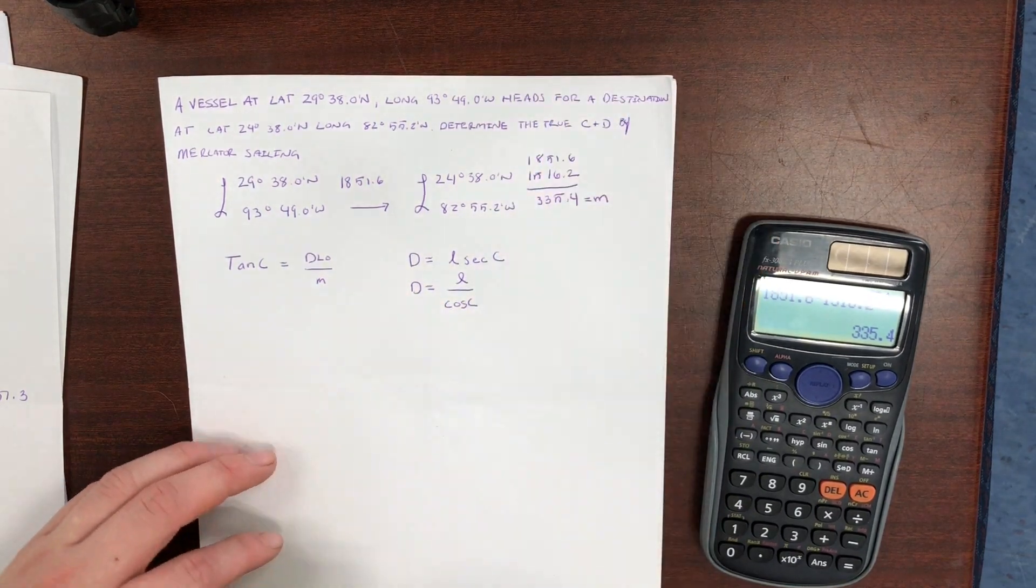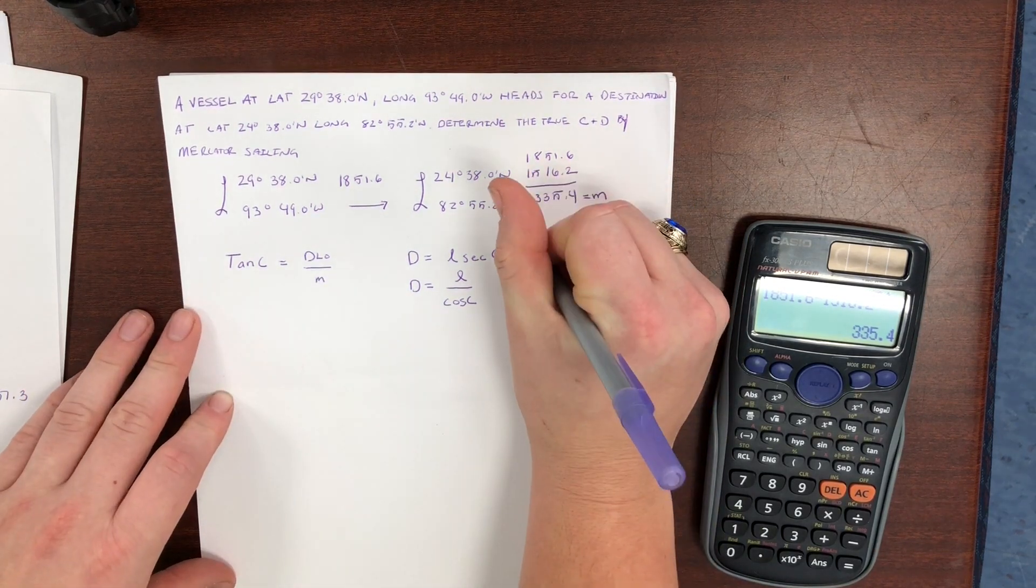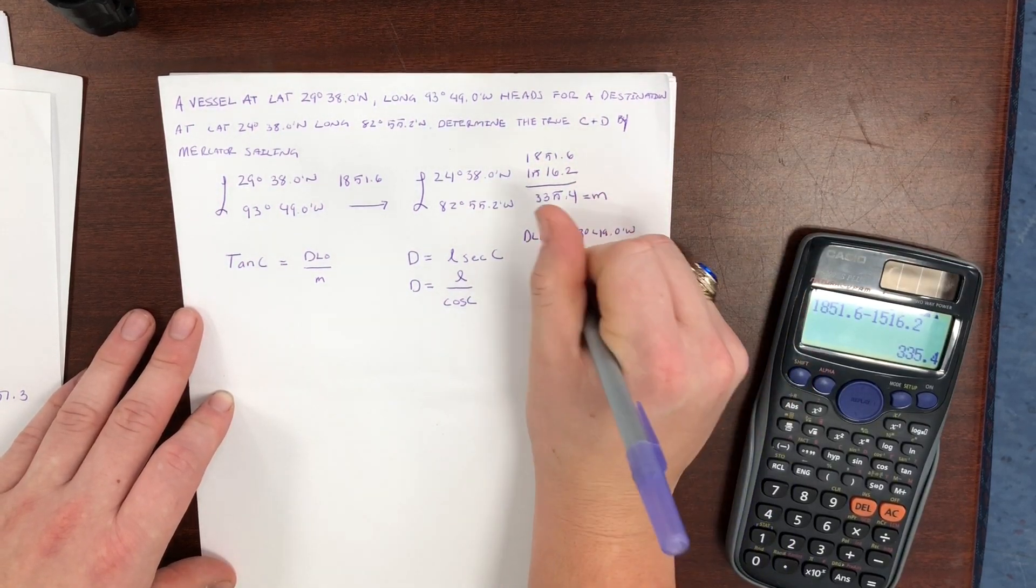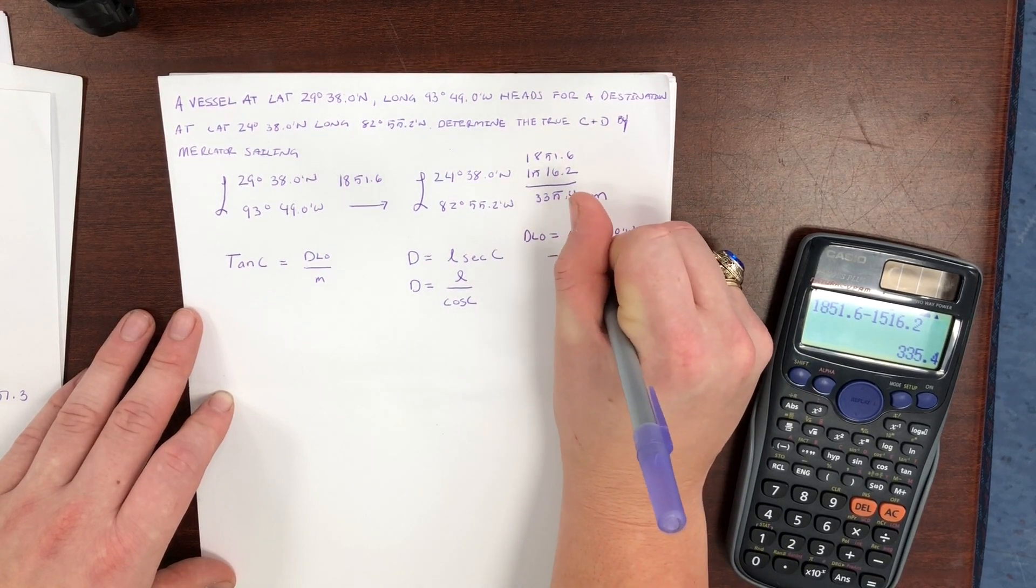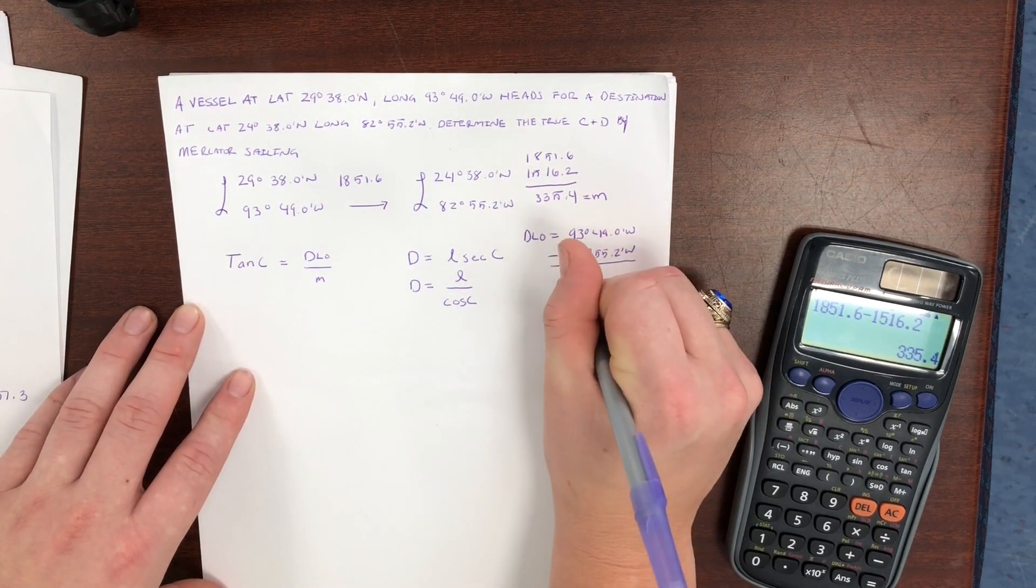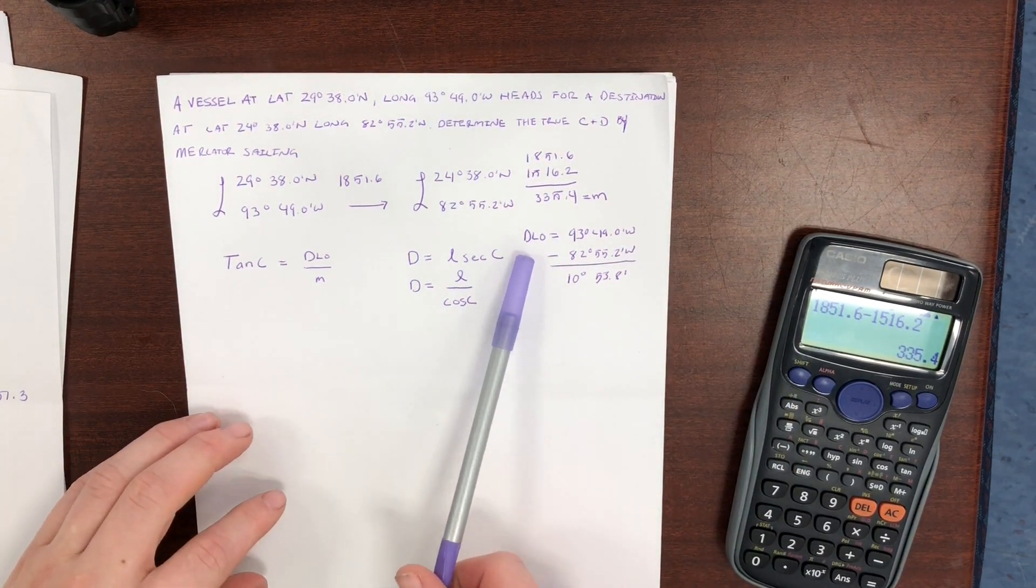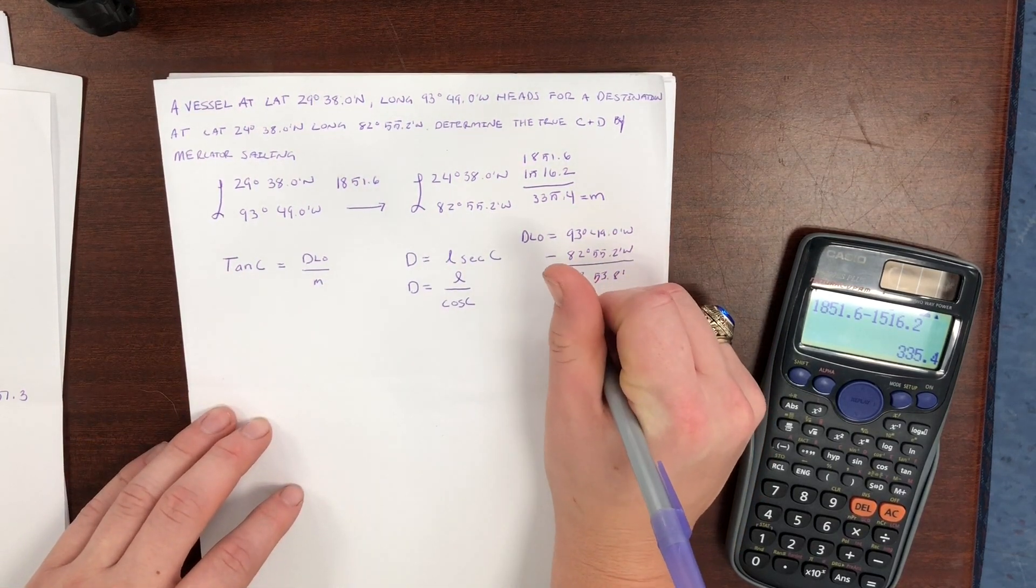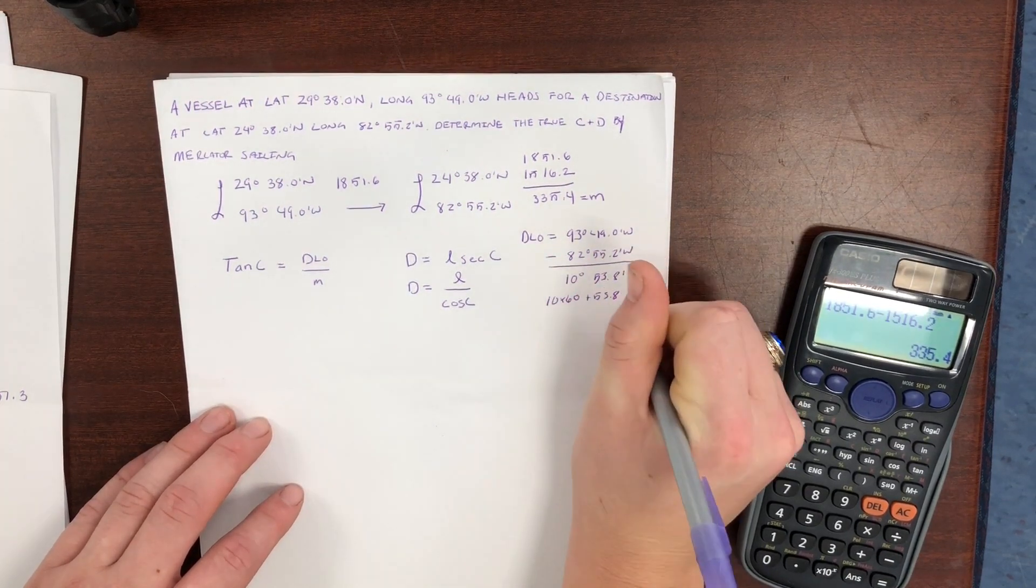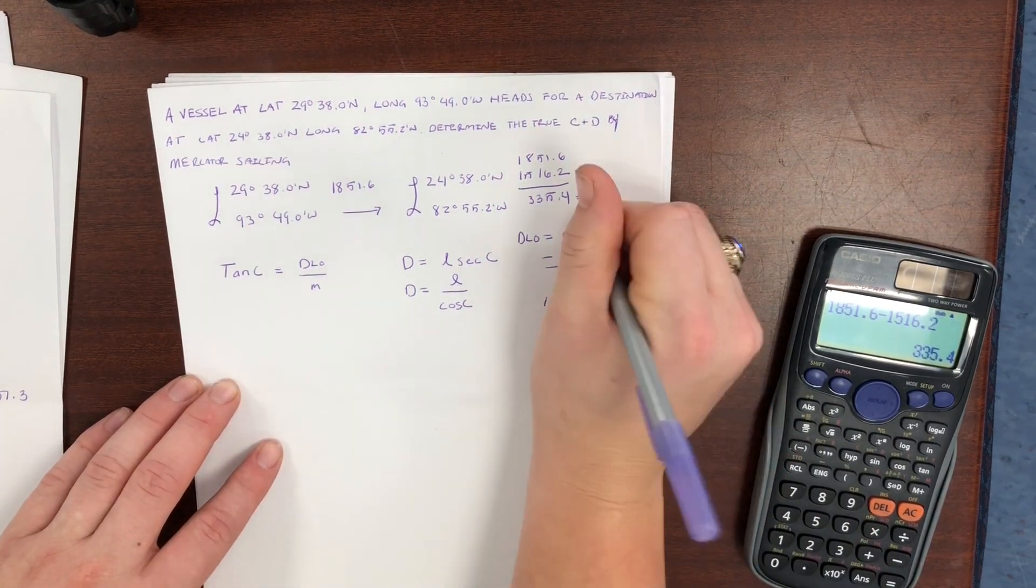Next thing we need to find is our difference of longitude. So DLO is equal to 93 degrees 49.0 minutes west minus 82 degrees 55.2 minutes west. Subtracting those two gives us 10 degrees 53.8 minutes. DLO in this term is expressed in minutes. So 10 times 60 plus 53.8 is equal to 653.8.